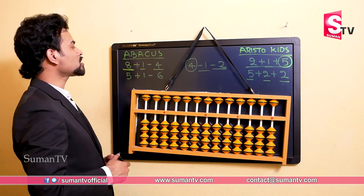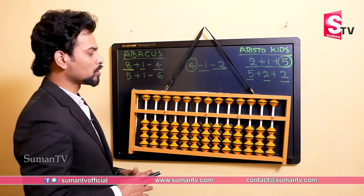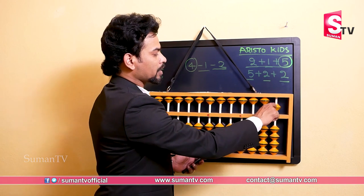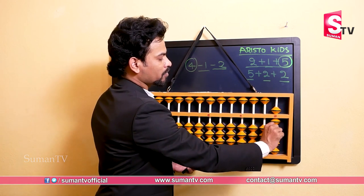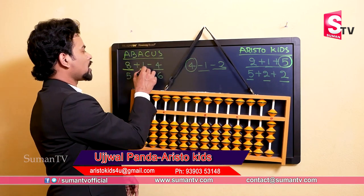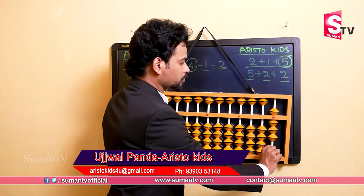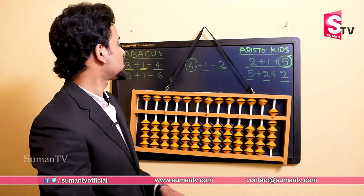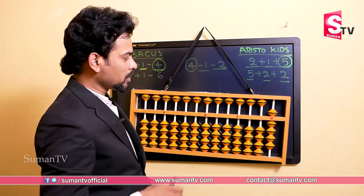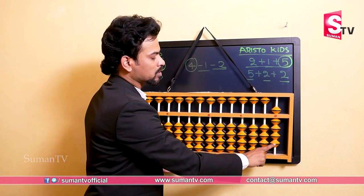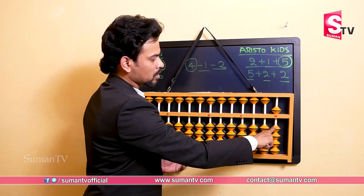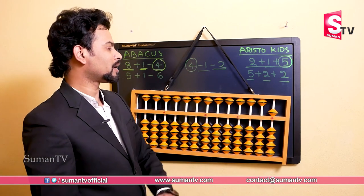The question is eight plus one minus four. Eight means five plus three: bring the upper bead down, then one bead up for six, one more for seven, one more for eight. Then plus one — one more bead up — eight plus one is nine. Now subtract four: using the index finger, make four beads go down — one, two, three, four. The final answer is five.